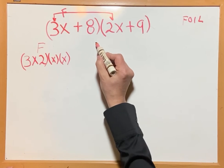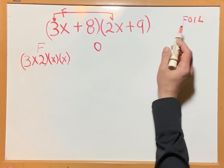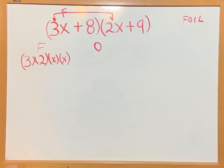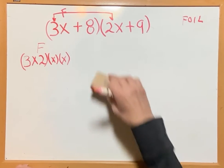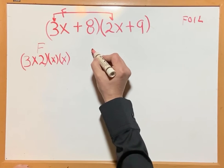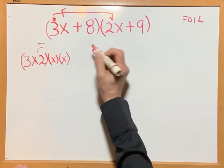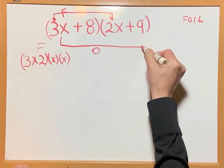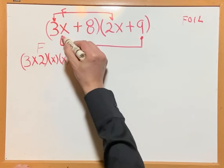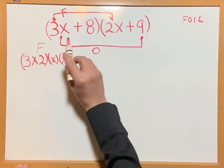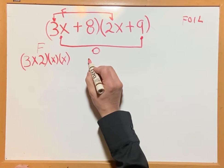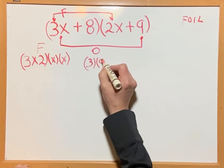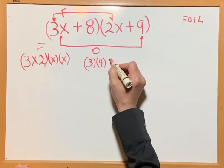O is for the outer side. The outer side should be 3x times 9. That should be 3 times 9 times x.